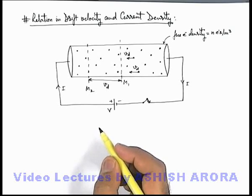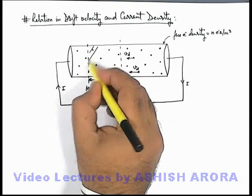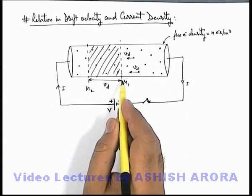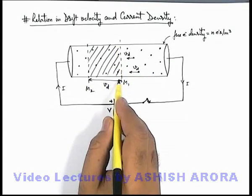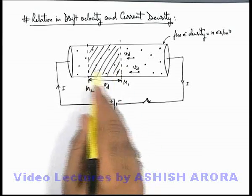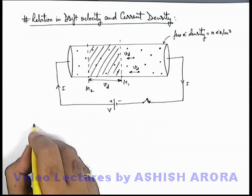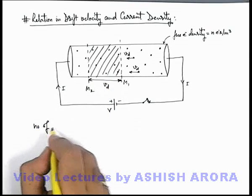Now in this situation we can say all those electrons which are there in that region between these 2 sections, in 1 second or in a unit time all these will cross the section M2 and will come forward. So here we can say we can also write number of electrons.